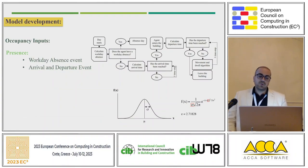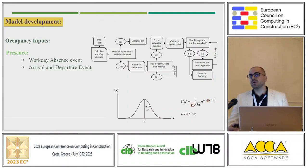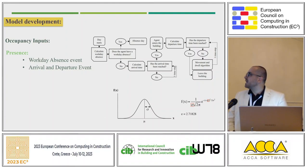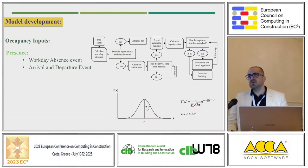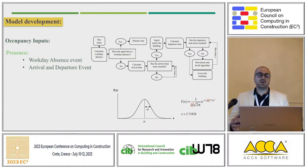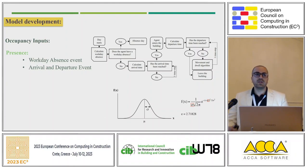The first occupancy input is presence, which includes two algorithms. The first is work-day absence events — whether occupants show up in the office or not. The second covers arrival and departure events, which we model as a Gaussian distribution. For example, if we assume occupants should be in the office around 8 a.m., not everyone will show up exactly at 8 — it could be sooner or later — and this modeling captures that dynamic human behavior.